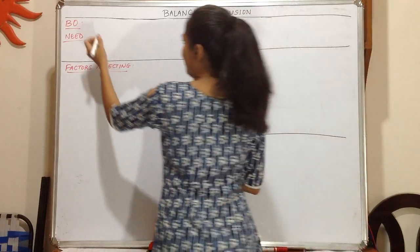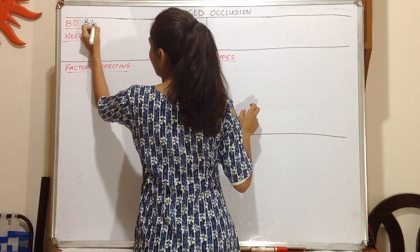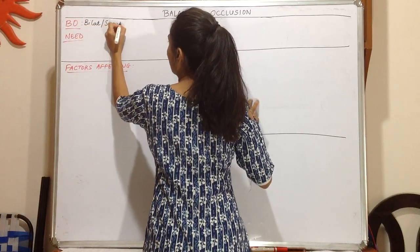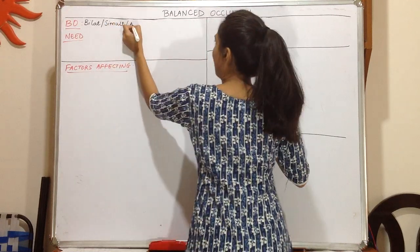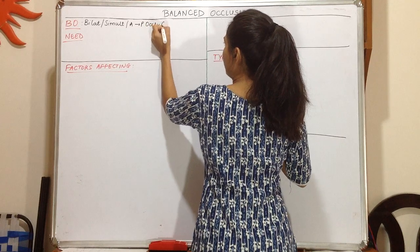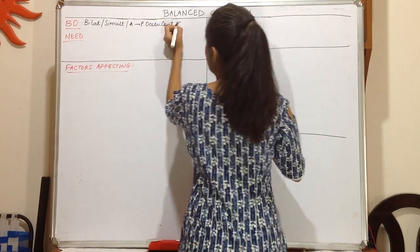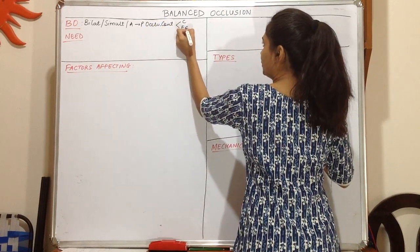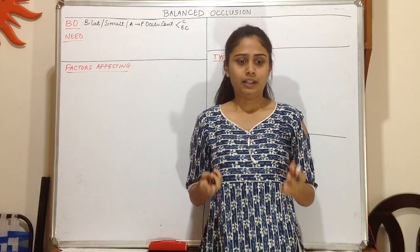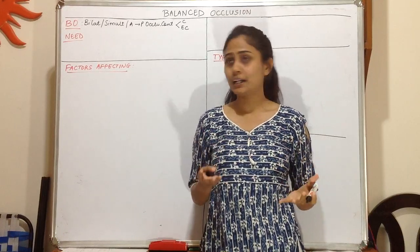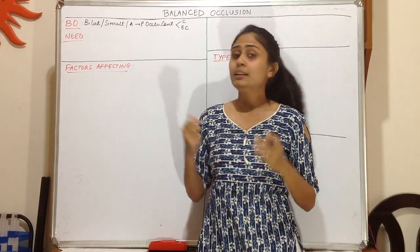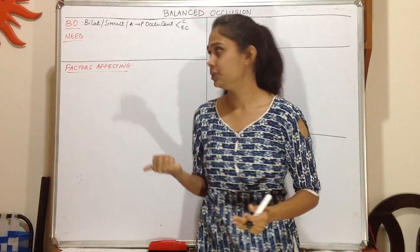So in layman terms, we can define balanced occlusion as a bilateral simultaneous contact which occurs on both the left and the right side, in the anterior and posterior occlusal direction, in centric as well as eccentric positions.